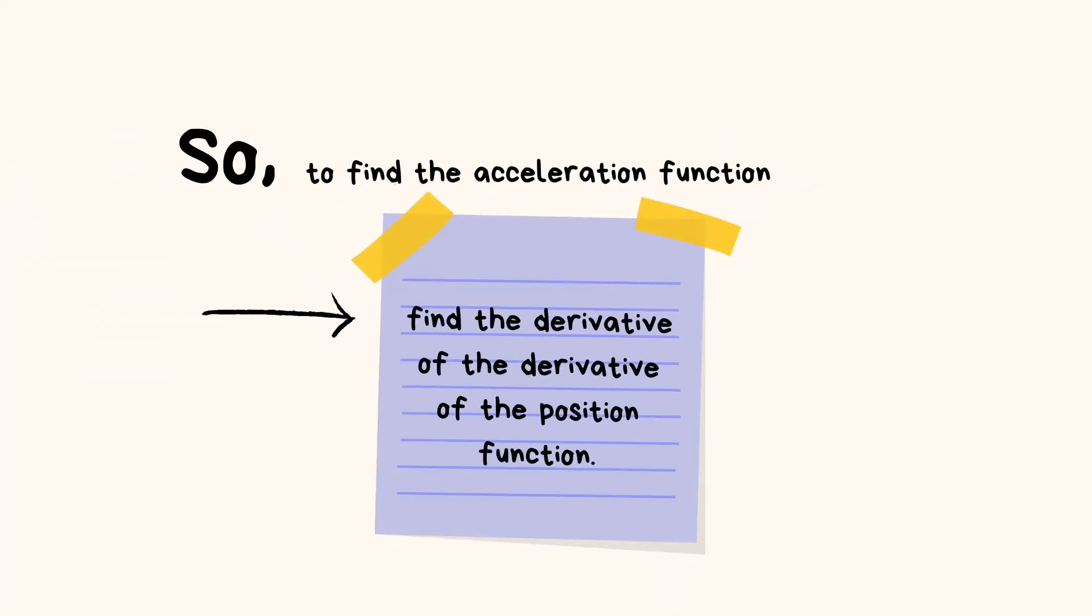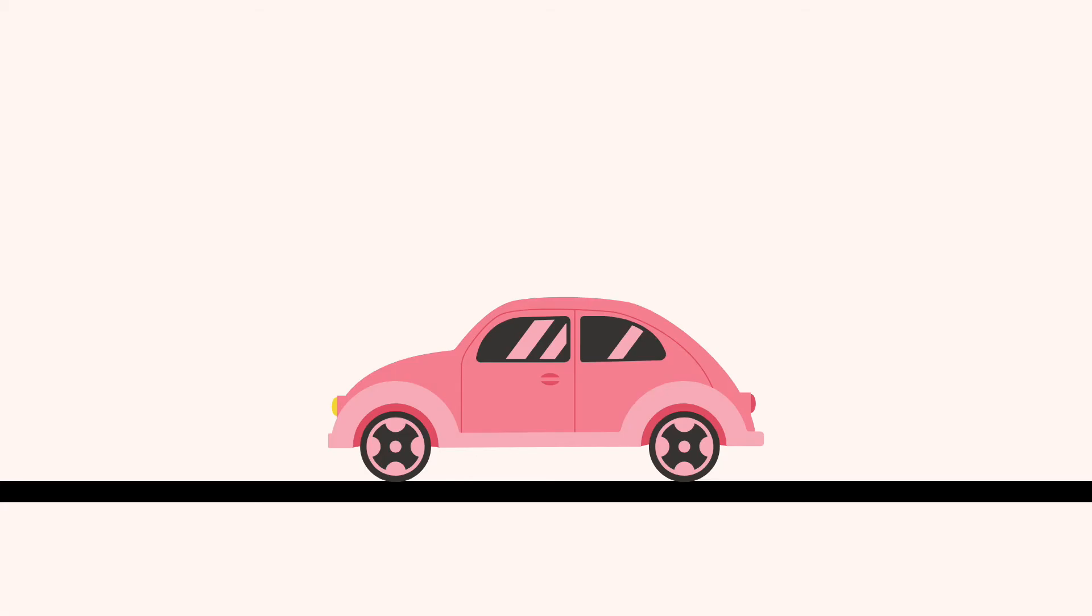So, in order to find the acceleration function, we have to find the derivative of the derivative of the position function. Take for example, the displacement in meters of a car moving in a straight line is given by this equation, where t is measured in seconds.